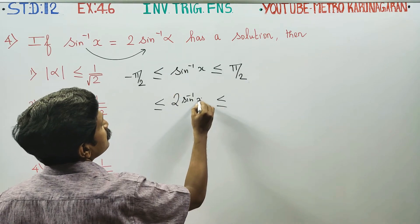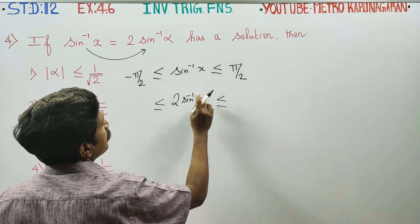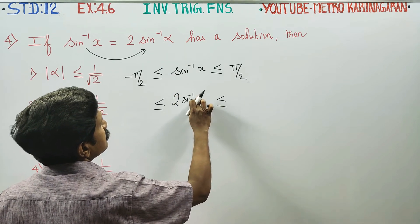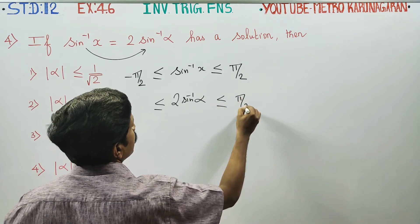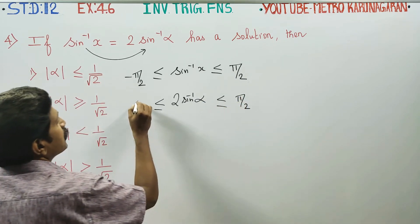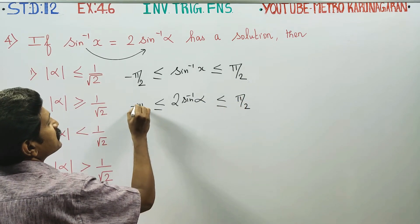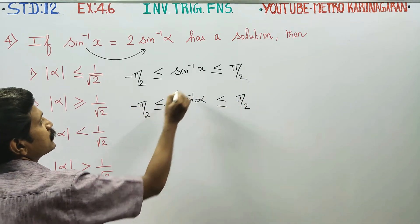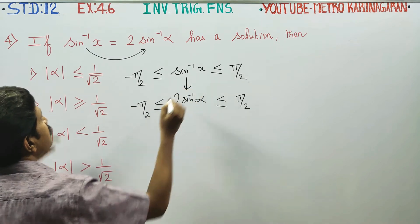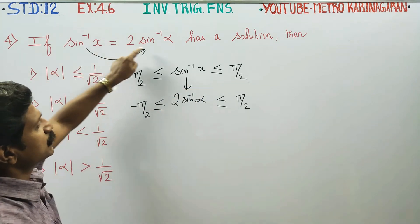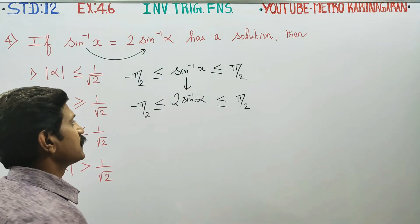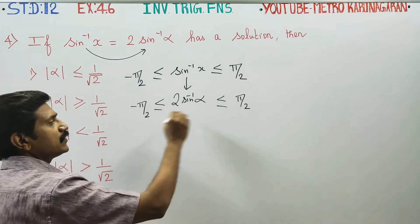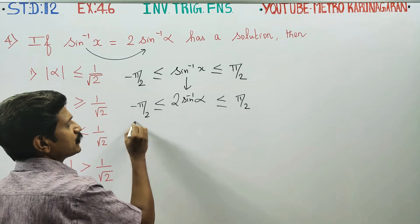Substituting sin inverse alpha, the inequality becomes: minus pi by 2 is less than or equal to 2 times sin inverse alpha, which is less than or equal to pi by 2. Now divide all the terms by 2.